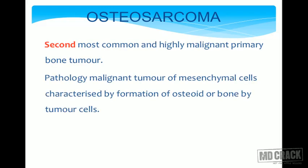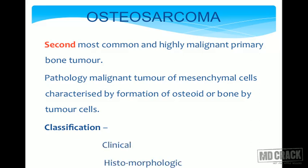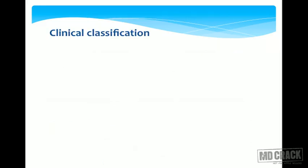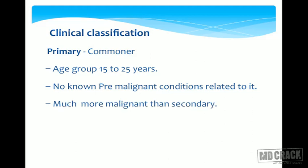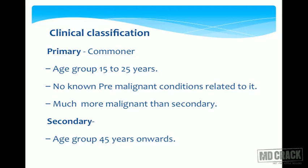The second important tumor is osteogenic sarcoma, or osteosarcoma — the second most common primary malignant tumor of the bone. Pathologically, it is a malignant tumor of mesenchymal cells characterized by formation of osteoid or bone by the tumor cells. The clinical classification divides it into primary and secondary. Primary osteosarcoma is more common, seen in the age group 15 to 25 years, with no known premalignant conditions, and is much more malignant than secondary osteosarcoma.